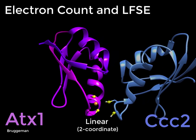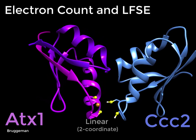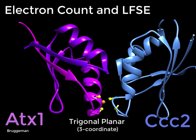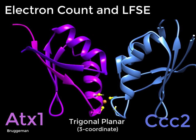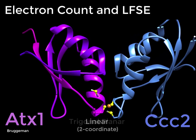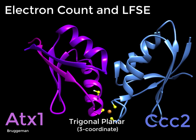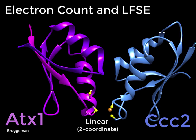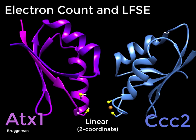The two coordinate linear and three coordinate trigonal planar complexes are both favorable to the copper 1 over the copper 2 due to the ligand field stabilization energy preference. This mechanism again promotes stability of copper 1 while disfavoring copper 2.